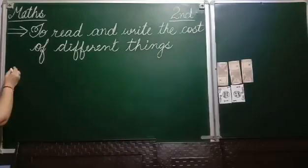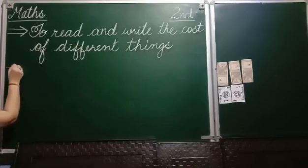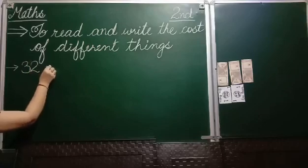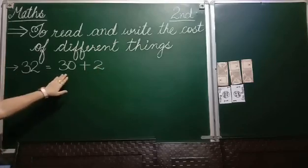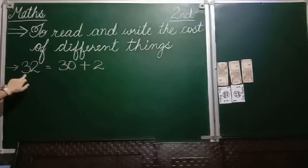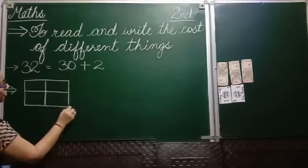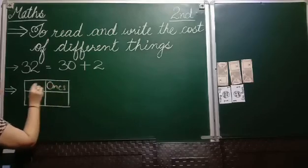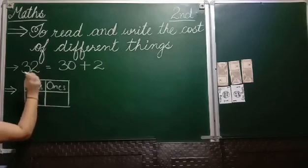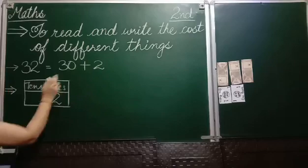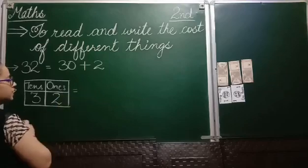Now see, I will write the number 32 in different ways. First of all, we know that 30 plus 2 is equal to 32. The other way is, this is the 1s house and this is the 10s house. What will we write in the 1s house? We will write 2 because 2 is at the 1s place. And how many 10s are there? 3 tens.